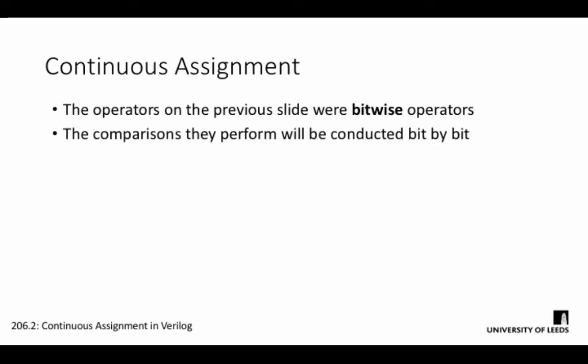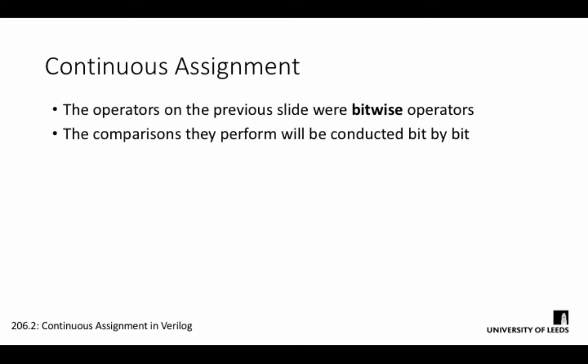The comparisons they perform will take place on a bit-by-bit basis. So if you were to AND two 4-bit wires together, the result would be a 4-bit value comparing bit0 to bit0, bit1 to bit1, and so on and so forth. This allows us to perform operations on all bits on a bus individually.